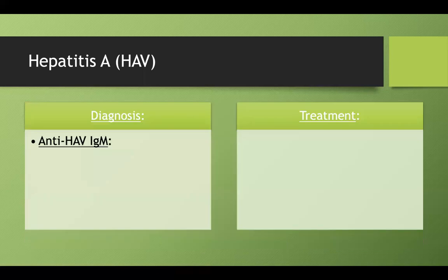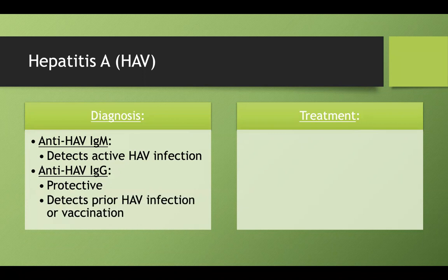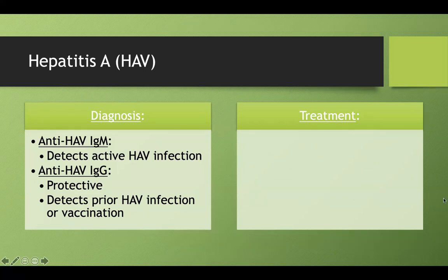To diagnose hepatitis A, you can use serology testing. Anti-hepatitis A virus IgM detects an active infection. Anti-hepatitis A IgG is a protective antibody telling you whether the person either had hepatitis A in the past or was vaccinated. Anti-dash just means your body has produced an antibody to whatever comes next.